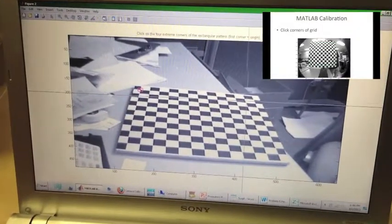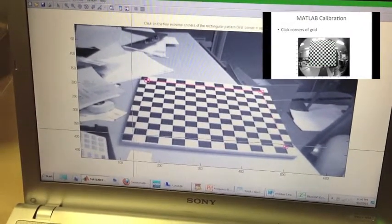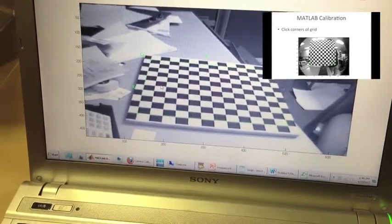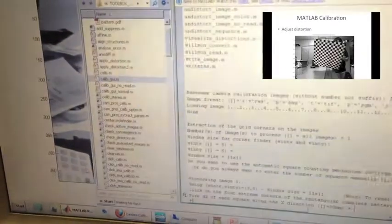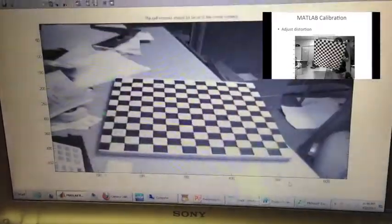In MATLAB, the corners of the box were first marked on our checkerboard pattern, after which point distortion was adjusted to ensure the red crosshairs aligned with the intermediate corners in the box.